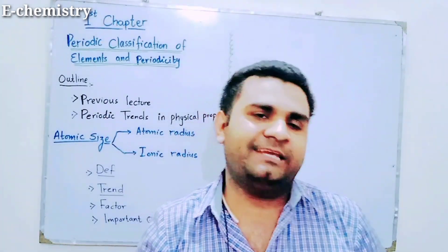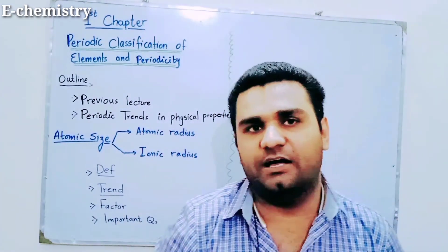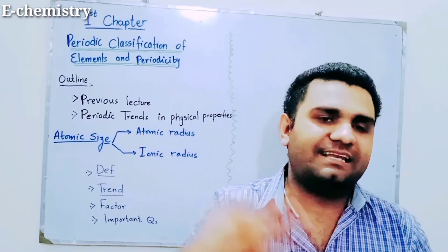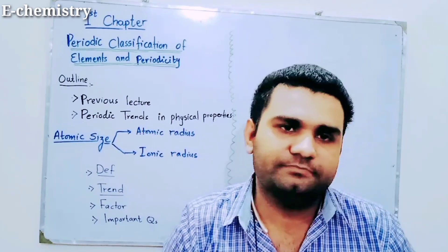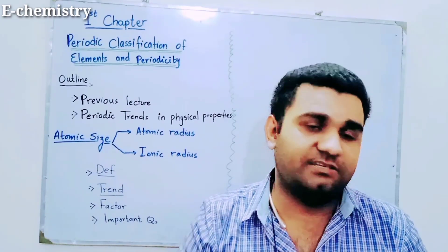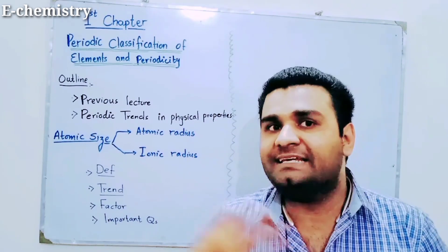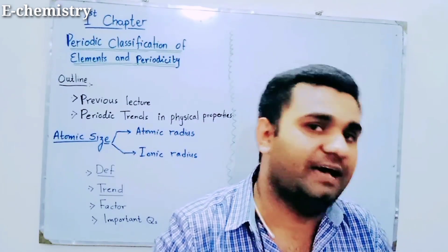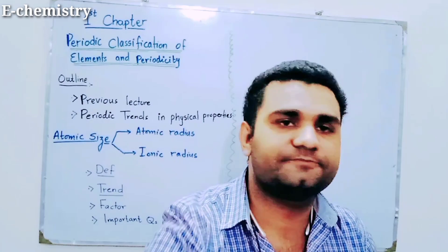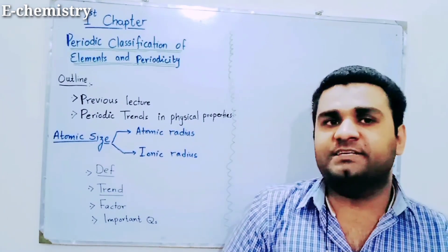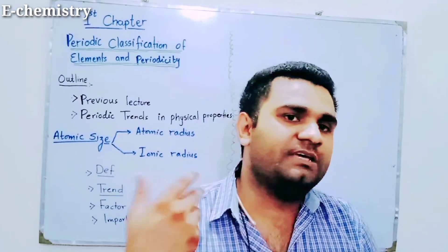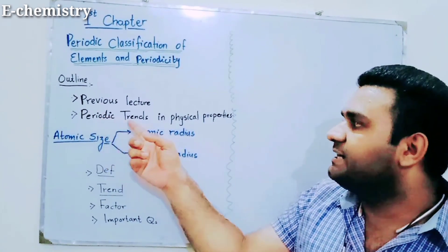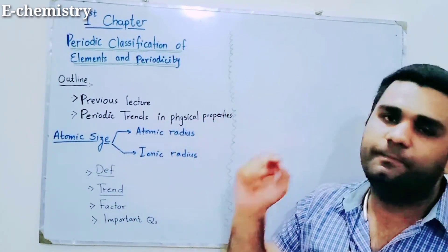In the modern periodic table, as we saw in the last class, we can classify elements into groups and periods, into certain families, into blocks, and also by their metallic character. Now in this lecture, we are moving ahead to our next topic: periodic trends in the physical properties.